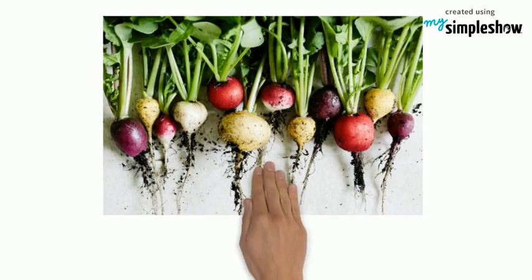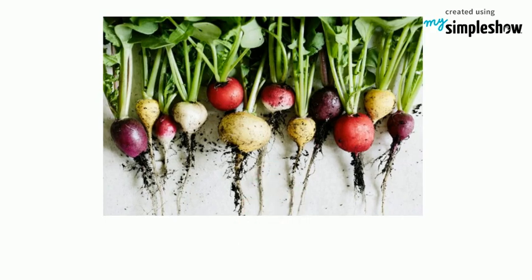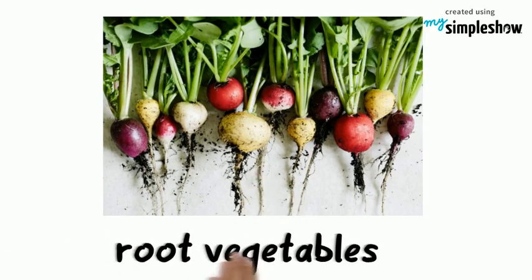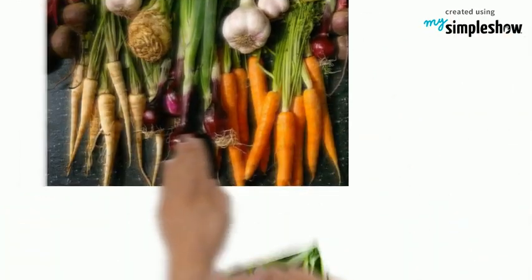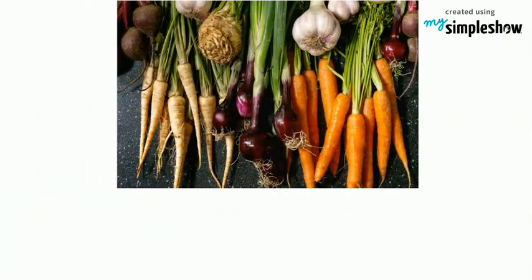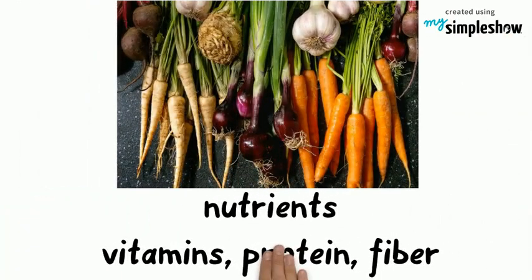The roots of many plants can be eaten. Many of these edible roots are known as root vegetables. They are full of nutrients such as vitamins, protein, and fiber. Root vegetables include carrots, beets, turnips, radishes, and sweet potatoes.